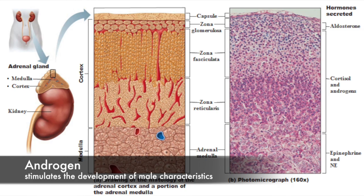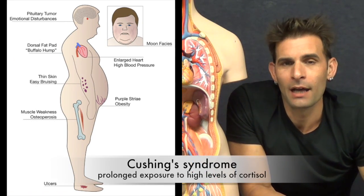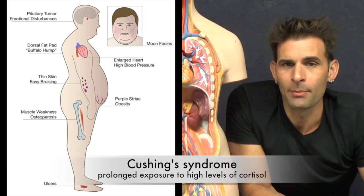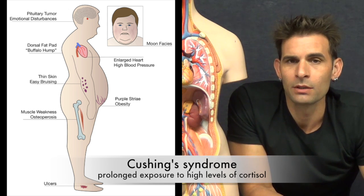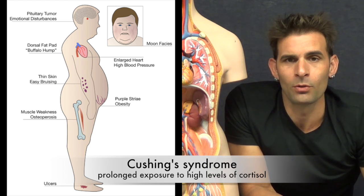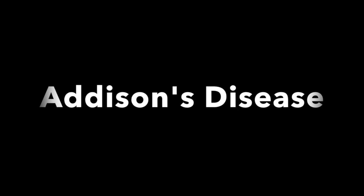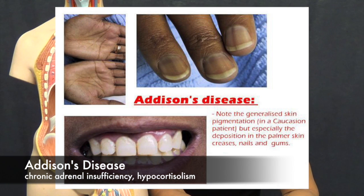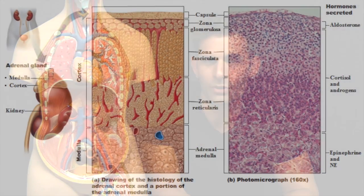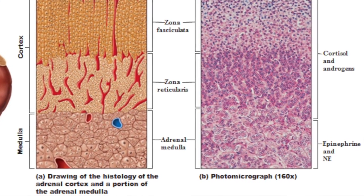The zona reticularis secretes gonadocorticoids such as androgens, which can induce male-like physiological factors. Cushing's syndrome is the result of high levels of cortisol, often caused by hypersecretion of the adrenal cortex or hypersecretion of adrenocorticotropic hormone from the anterior pituitary. Addison's disease is the result of low levels of glucocorticoids and often mineralocorticoids.